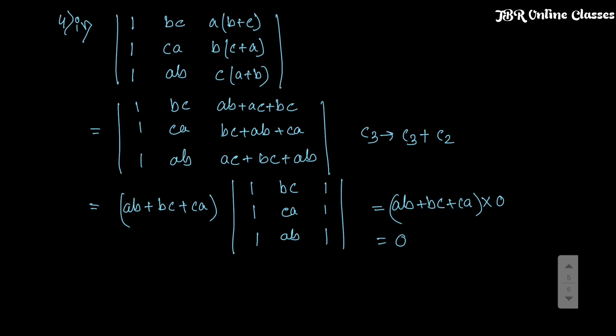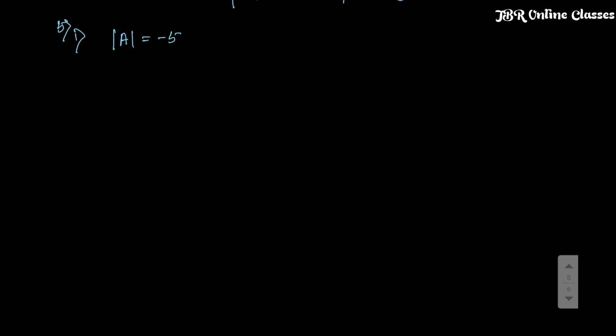Problem 5 is the last problem for this video. Please share and subscribe to my channel. Sub-problem 1: if A is a square matrix of order 2 and det(A) = -5, find det(3A). For order 2, det(3A) = 3² × det(A) = 9 × (-5) = -45.